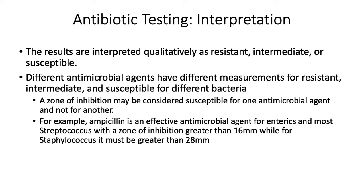As another example, ampicillin is an effective antimicrobial agent for enterics — those are gram-negative rods such as E. coli — and most Streptococcus, with a zone of inhibition greater than 16 mm. While for Staphylococcus it must be greater than 28 mm.